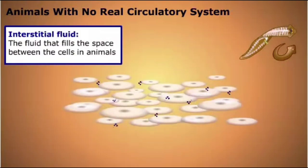The fluid filling the space between cells in an animal is called interstitial fluid. This fluid plays a vital role in the transport of chemicals between cells and tissues.